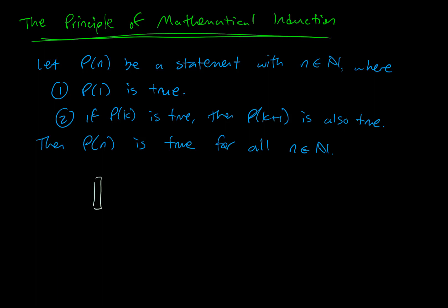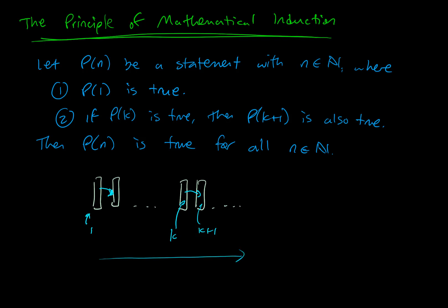The picture of this is dominoes — I think it's a great way to think about it. Imagine a bunch of dominoes set up, and we let this one be the first one. When we say 'true,' the domino has fallen over. I know the first domino has fallen over, and when I get to the kth one, if it has fallen over, then the k plus 1 one also falls over. We know every time the kth one falls over the k plus 1 domino falls over, and the first one fell down — so all the dominoes will fall. That's the principle of mathematical induction.